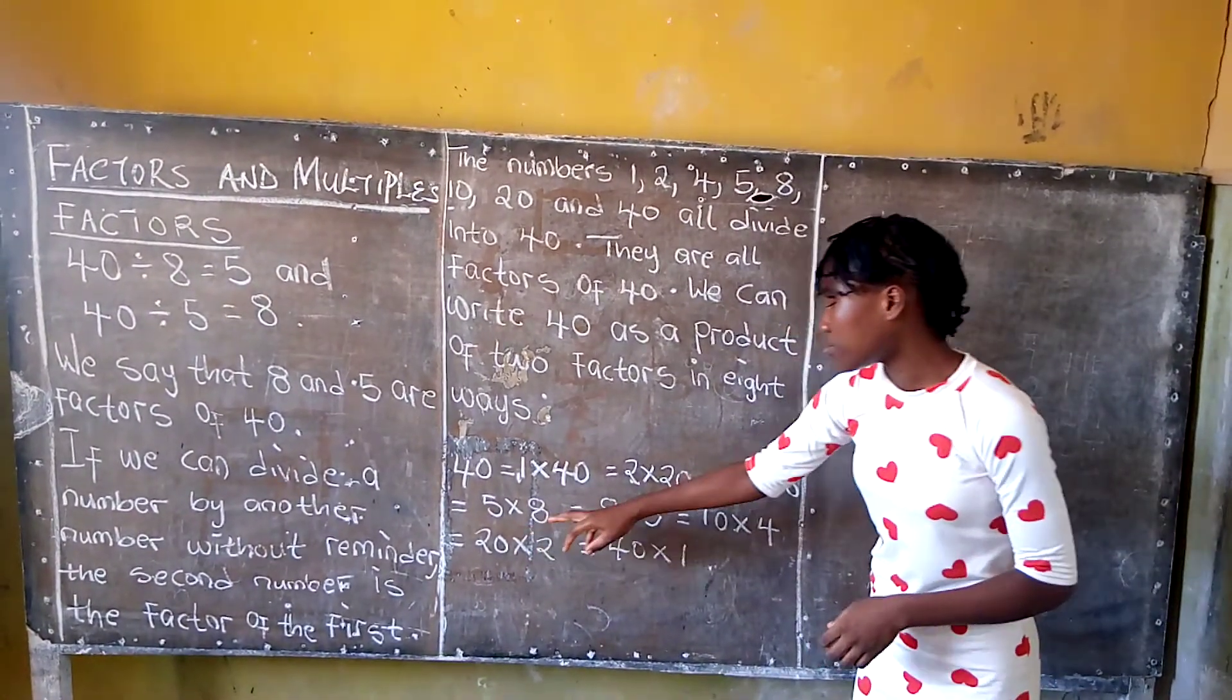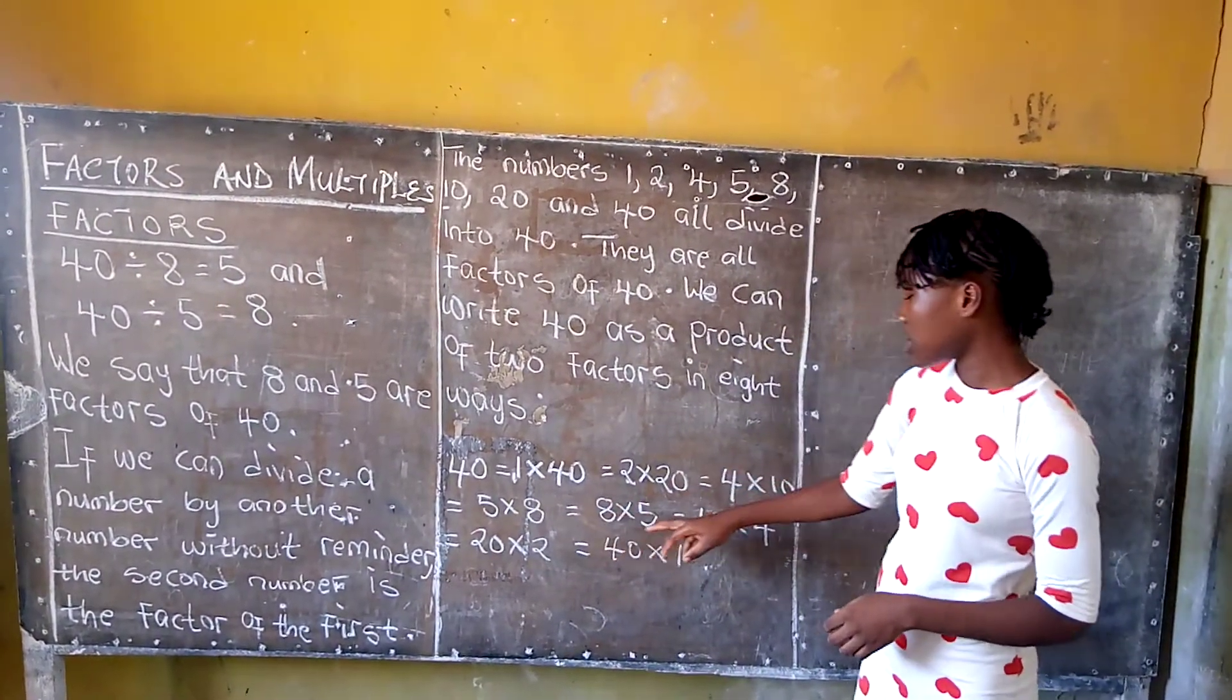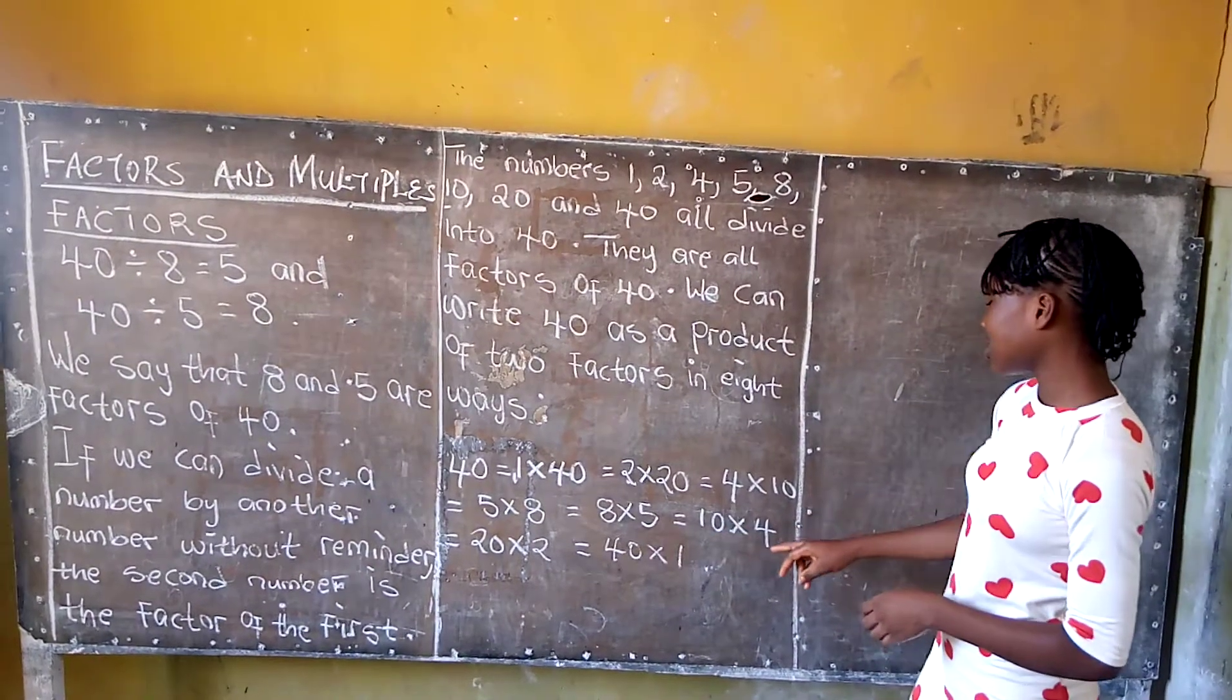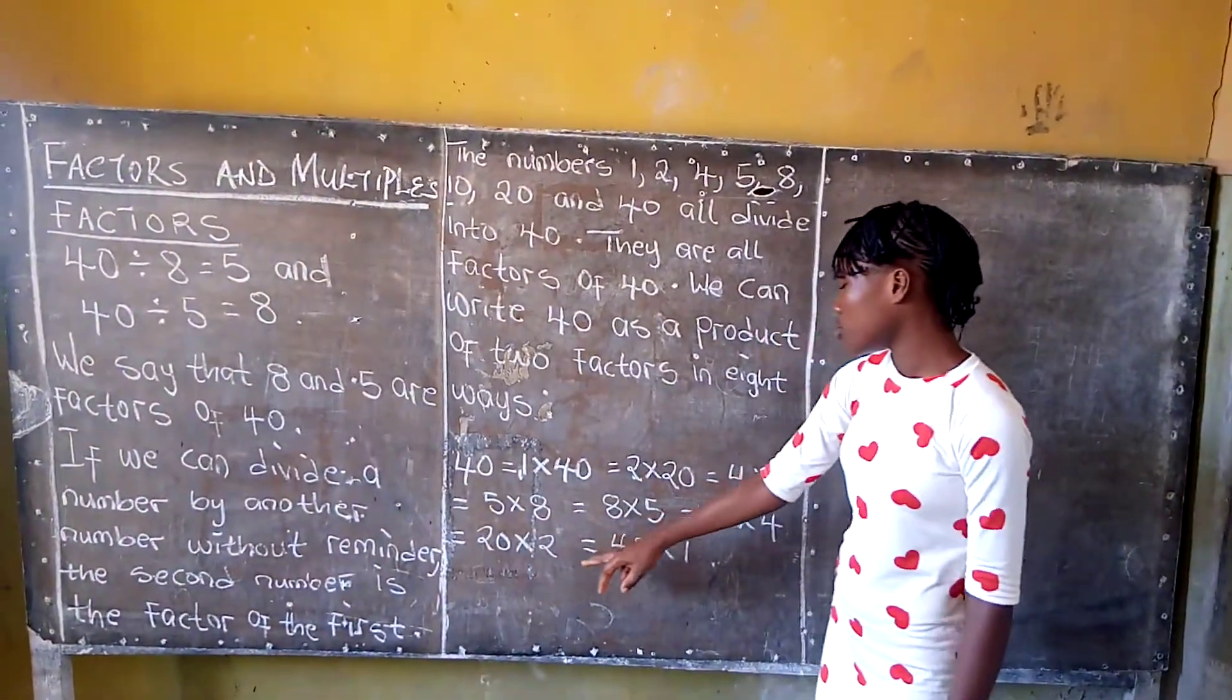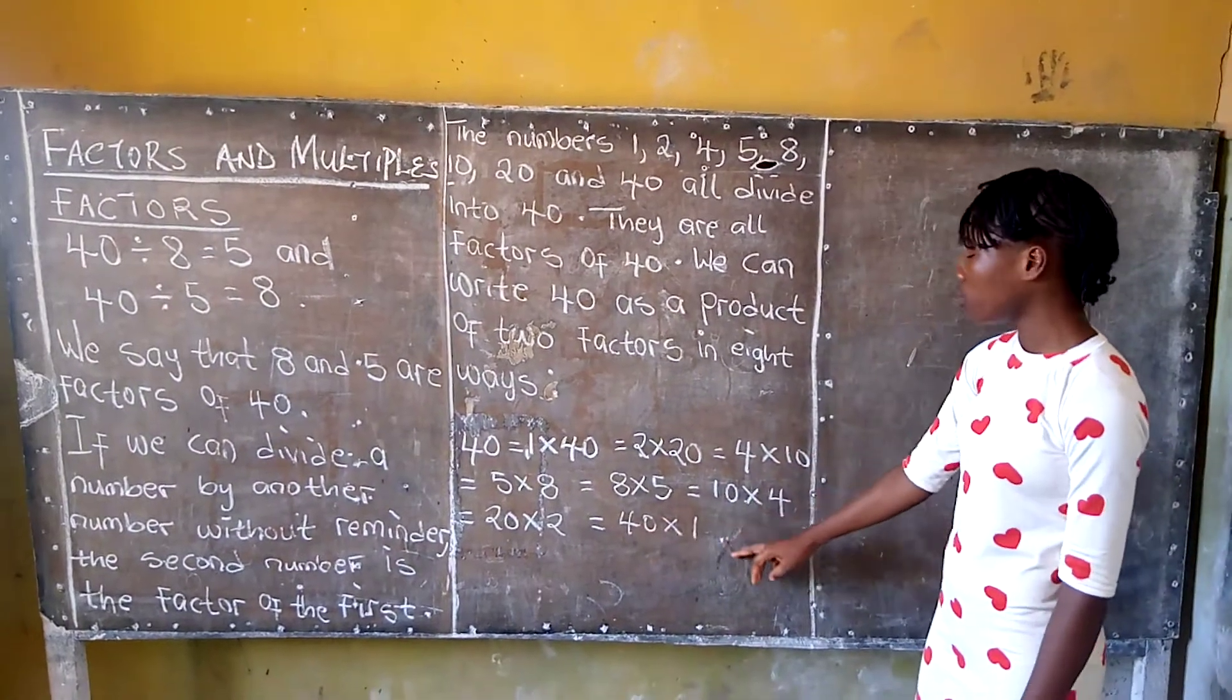Equals to 5 times 8, equals to 8 times 5, equals to 10 times 4, equals to 20 times 2, equals to 40 times 1.